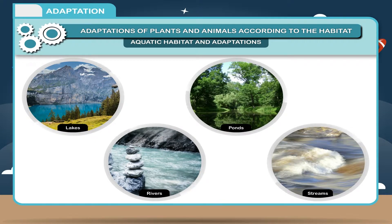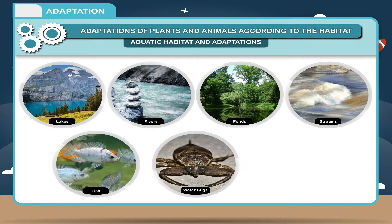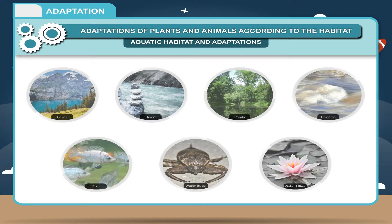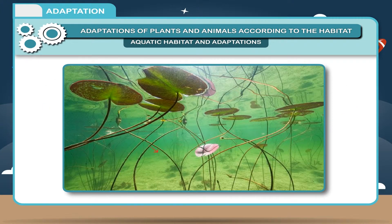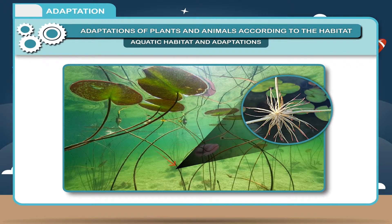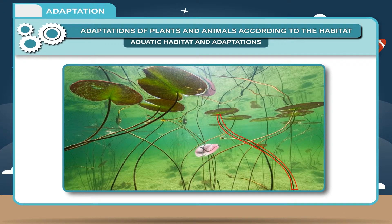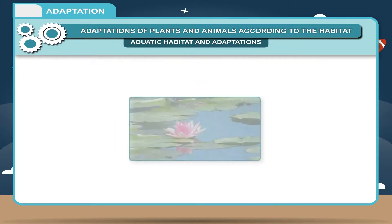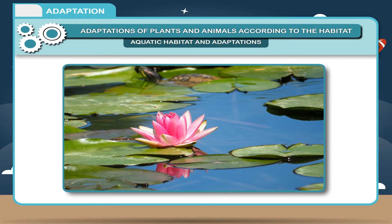Examples of animals living in these habitats are various types of fish, water bugs and water lilies. Some of these plants have their roots fixed in the soil below the water. Roots are much reduced in size and their function is fixation and not absorption. The stem of these plants are long, hollow and light, growing up to the surface of water while the leaves and flowers float on the surface.